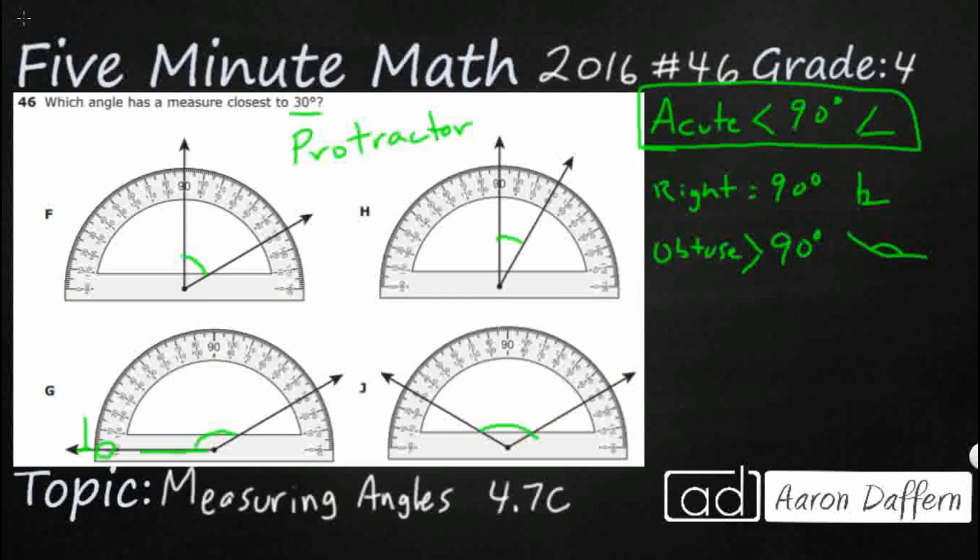We're going to skip count by 10, 20, 30, 40, 50, 60, 70, 80, 90. See, there's my 90 degrees right there. So that's my square corner. We're going past that, which means this is an obtuse angle. 100, 110, 120, 130, 140. And it's right there between 140 and 160. That looks like 150 degrees.